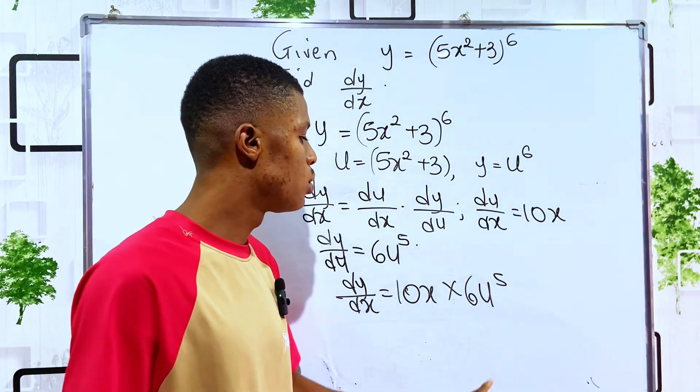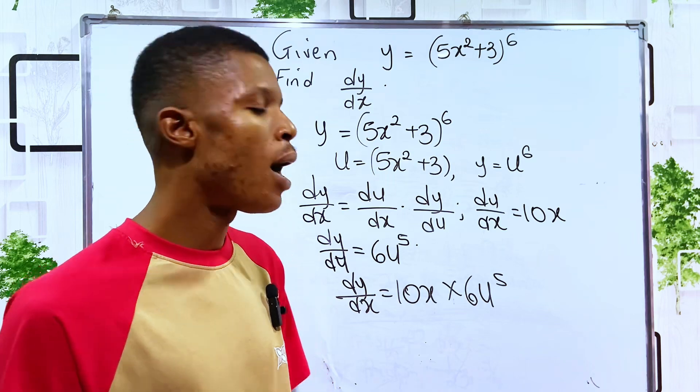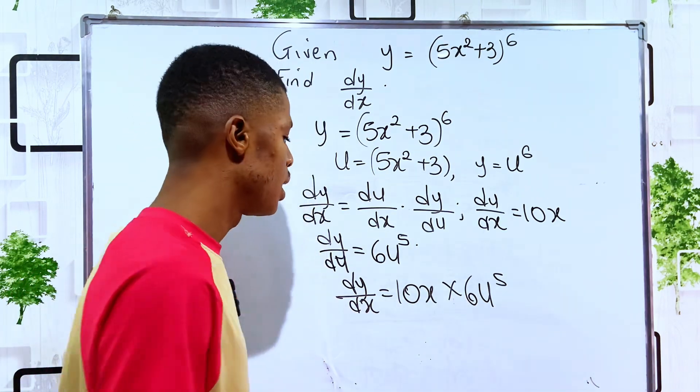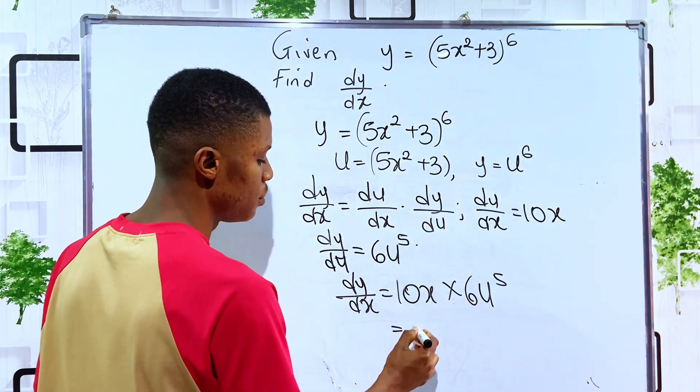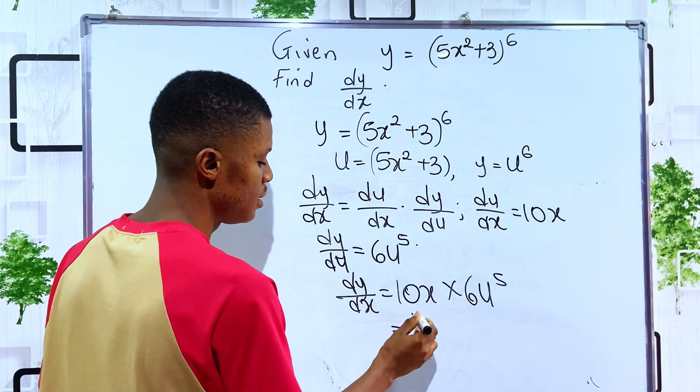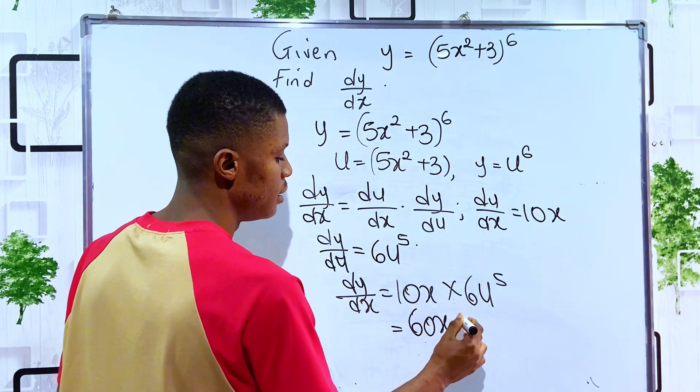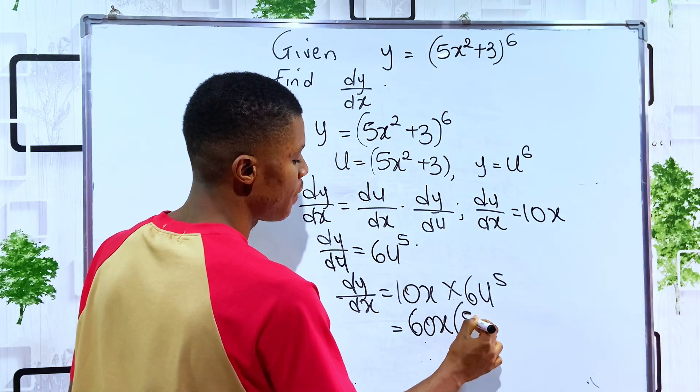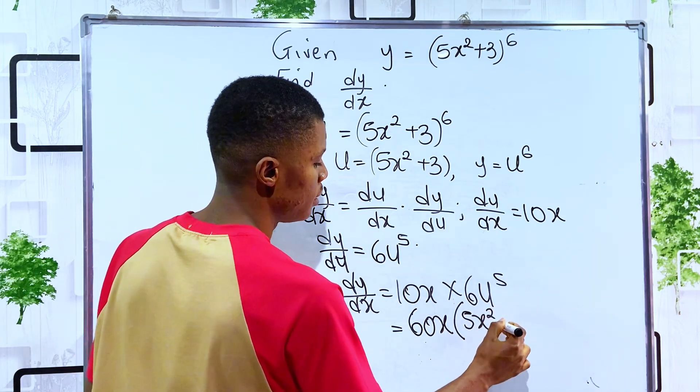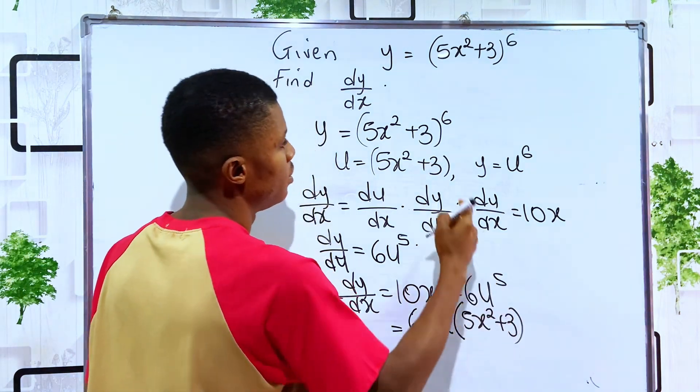Then since we've gotten this, we'll now plug back the value of u in the derivative. So for us to do that, you have it to be 6 times 10 is 60. We have it as 60x times 5x squared plus 3, the u, to the power of 5.